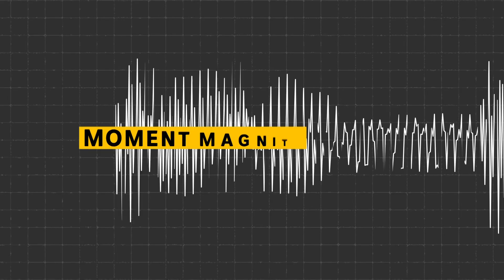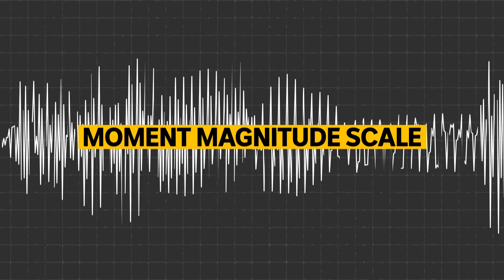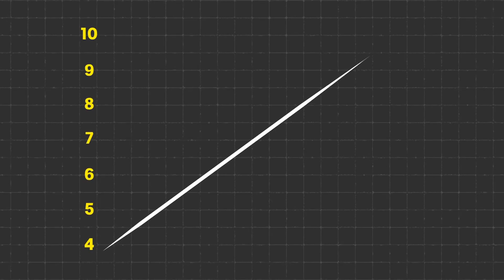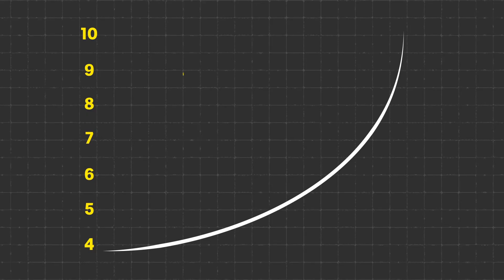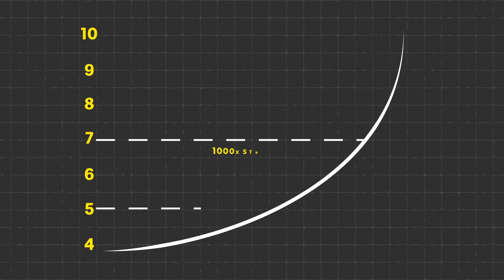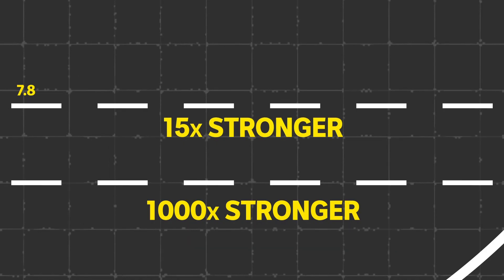That number — 7.8 — is a measure taken from something called the Moment Magnitude Scale, the scale most seismologists use to quantify how much energy was released and how big an earthquake was. The difference between each magnitude isn't a straight line — it's a logarithmic scale, which means each step up is 10 times more shaking and 32 times more energy released. So a 7.0 magnitude earthquake is roughly 1,000 times stronger than a 5.0, and a 7.8 is 15 times stronger than that.